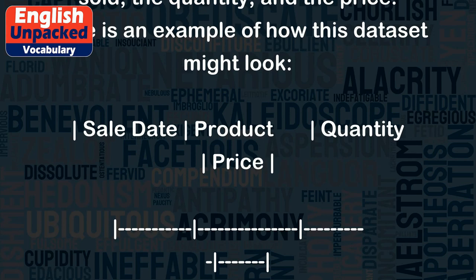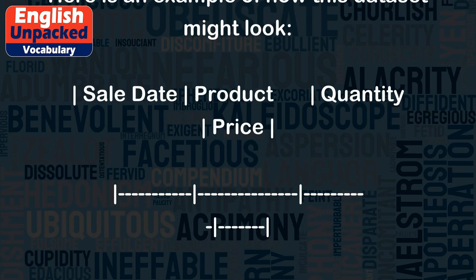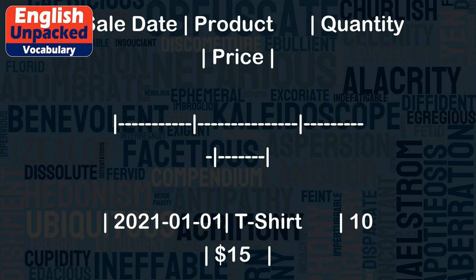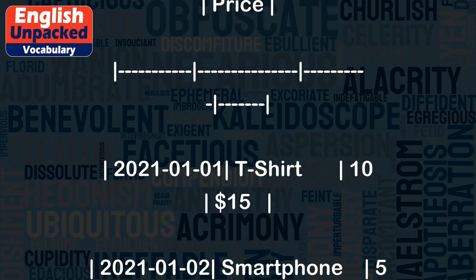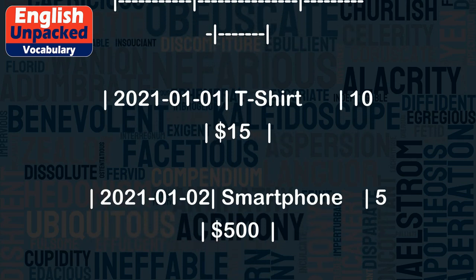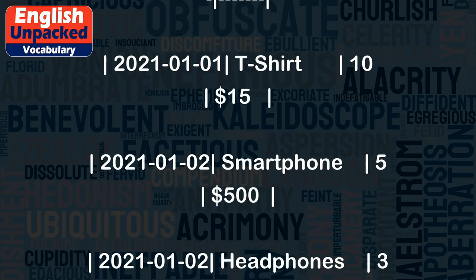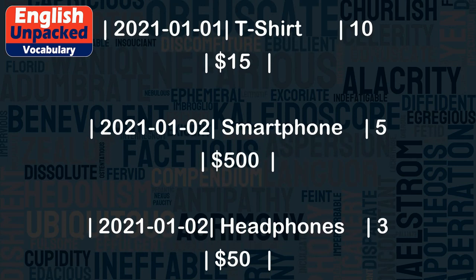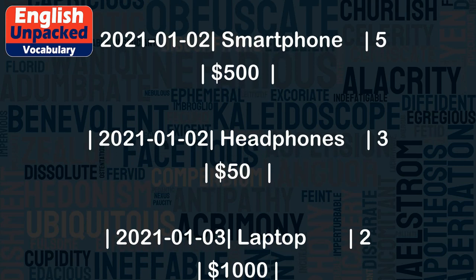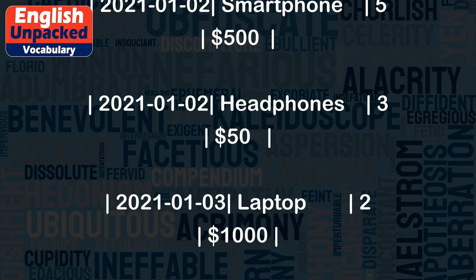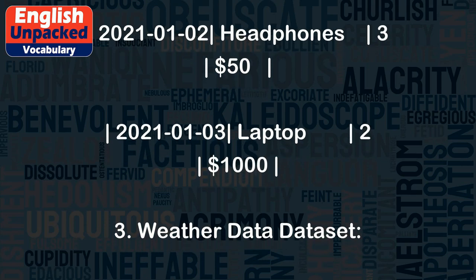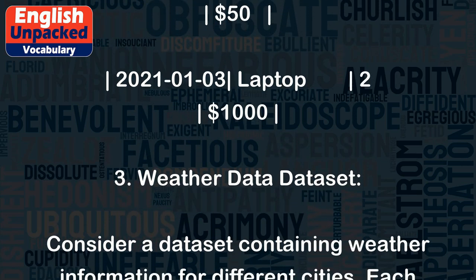Here is an example of how this data set might look: Sale Date, Product, Quantity, Price. January 1, 2021 — T-shirt, 10, $15. January 2, 2021 — Smartphone, 5, $500. January 2, 2021 — Headphones, 3, $50. January 3, 2021 — Laptop, 2, $1,000.